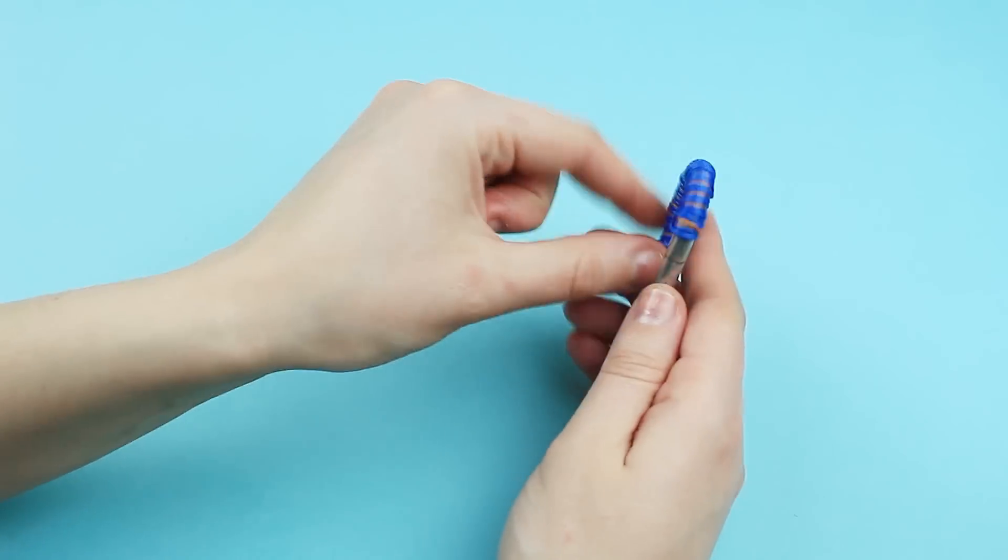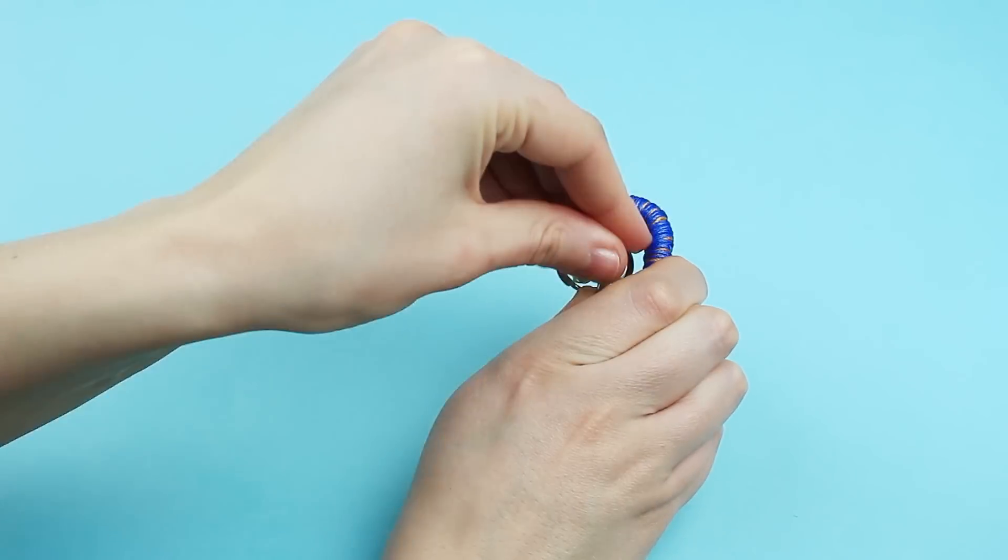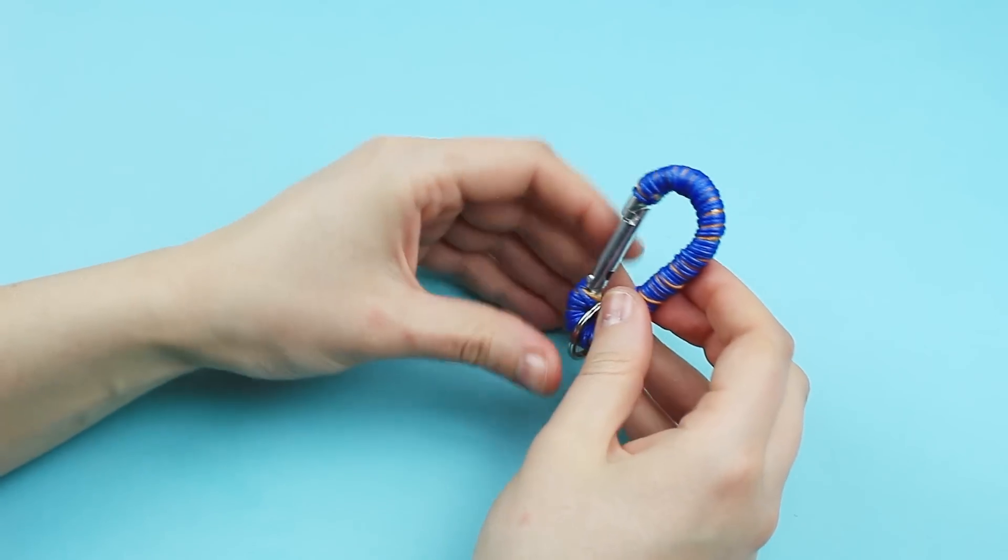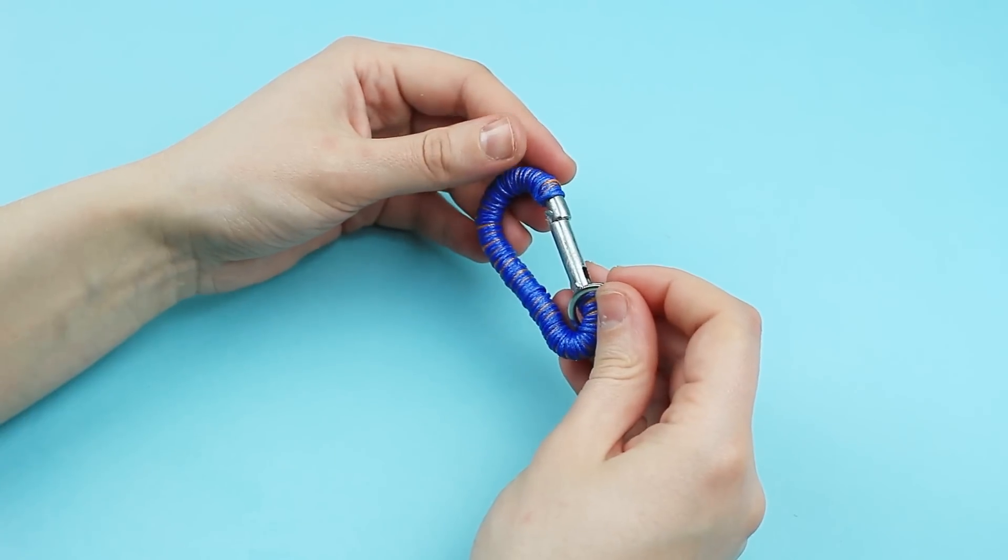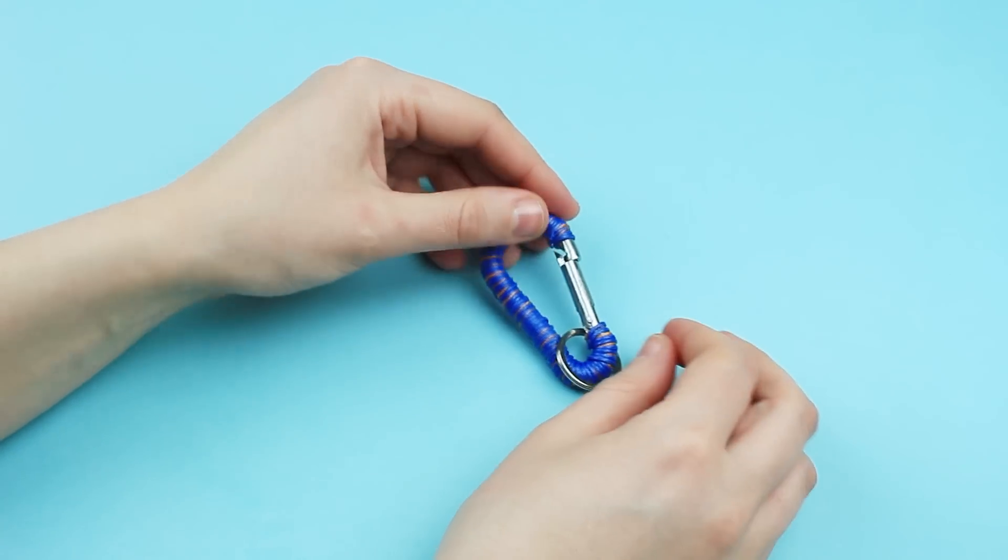Open the carabiner and put on a keychain ring. This smart keychain is simple to make. It will keep safe your boyfriend's keys.